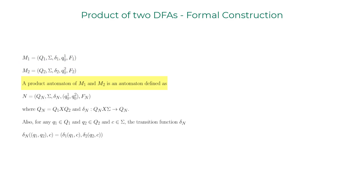A product automaton of m1 and m2 is a new automaton I'll name N. It has a set of states Q_N, the same alphabet sigma, a transition function delta_N, a start state that is the pair of start states from m1 and m2, and a set of final states F_N. The set of states Q_N is defined as the Cartesian product of Q1 and Q2.